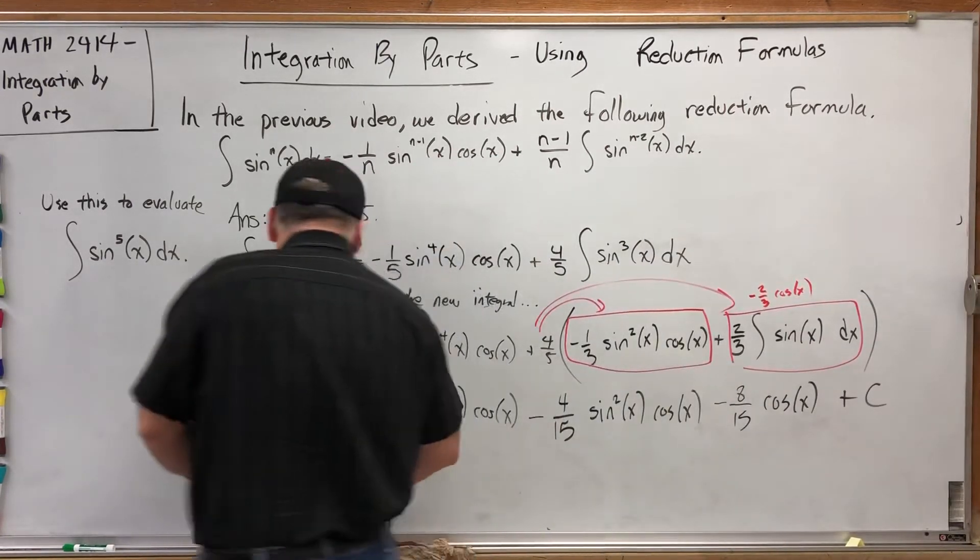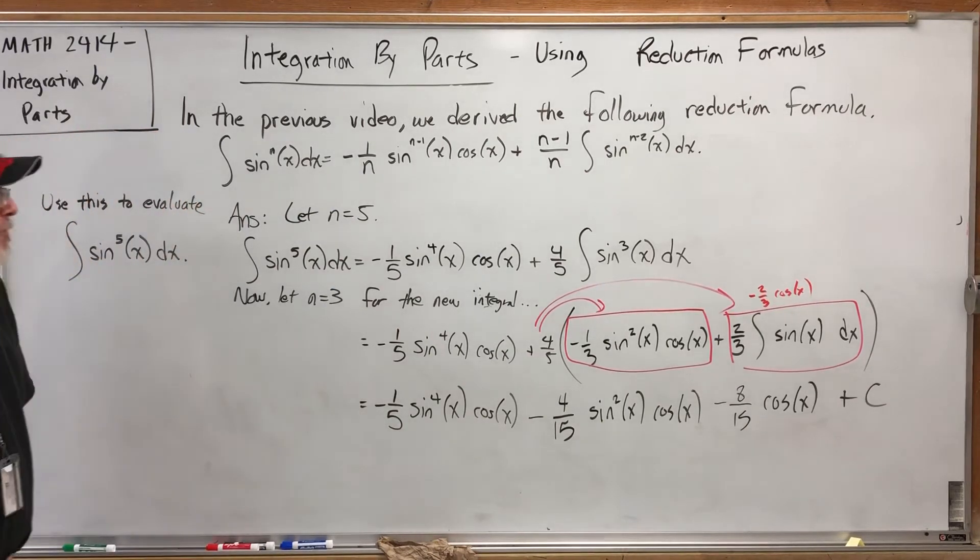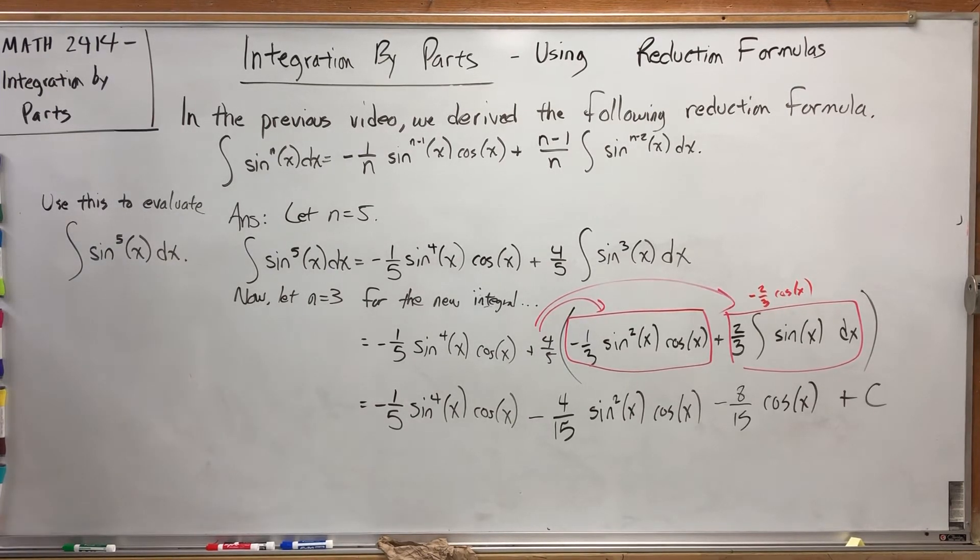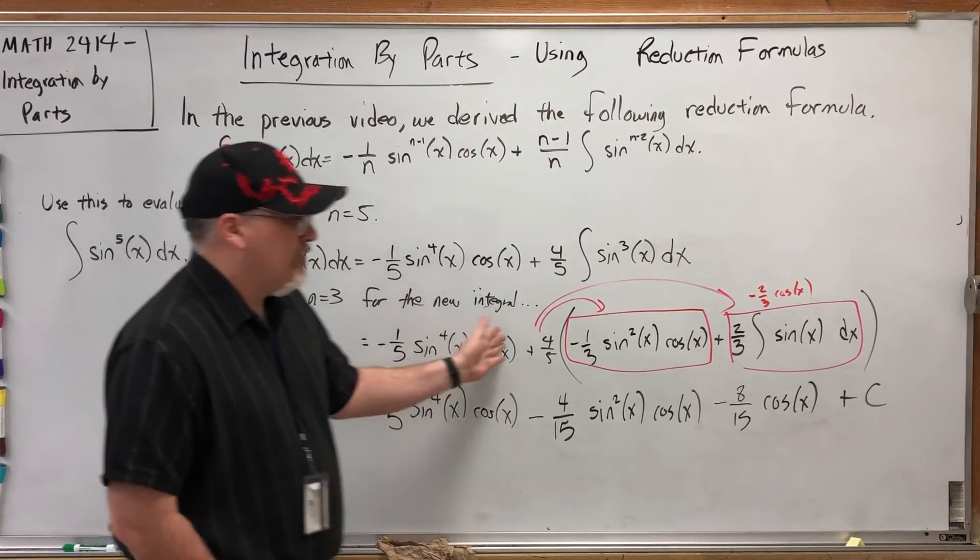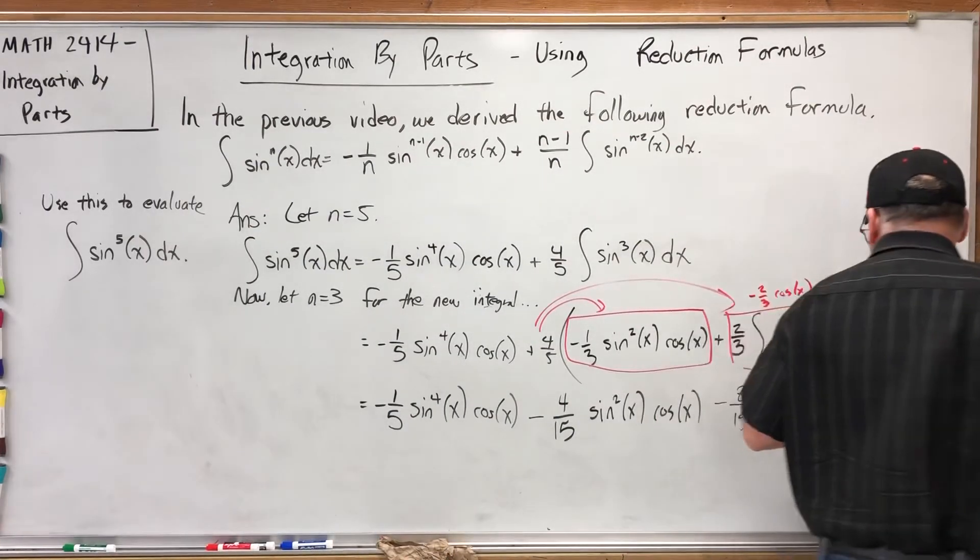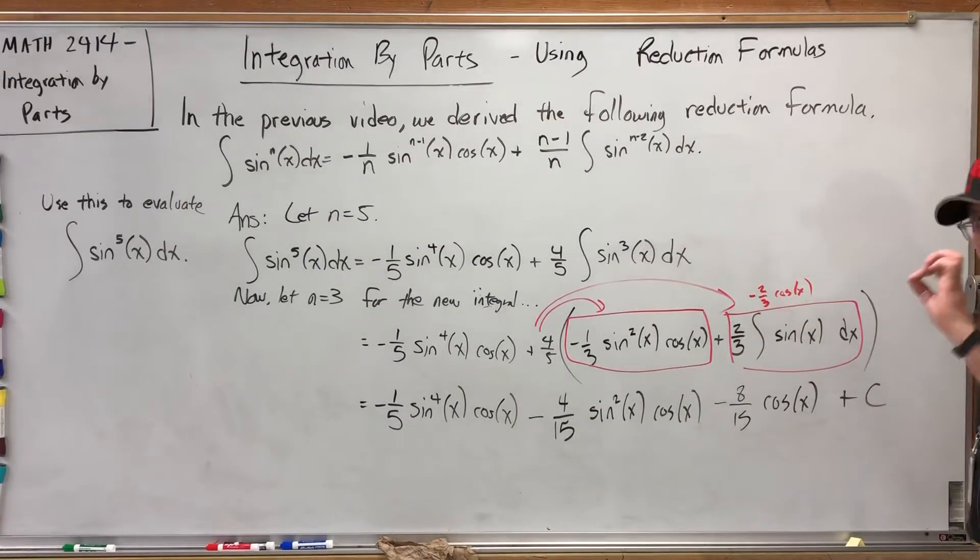So that's how you use a reduction formula when it comes to integrating. Whether or not you create the reduction formula is one thing, or whether or not you can create it is one thing, but implementing is another thing. So to just review, by using the reduction formula we took an integral of the fifth power of sine and rewrote it as an integral of the third power of sine, but by using the reduction formula again we wrote that as an integral of the first power of sine, which we could complete manually. Then distribute, watch your signs, and clean it up.